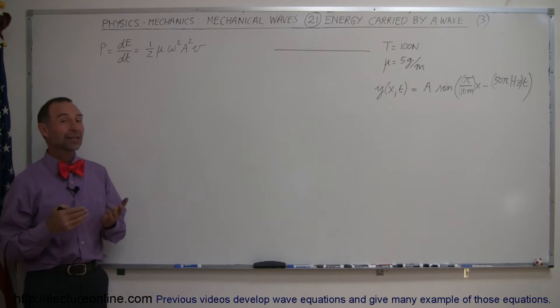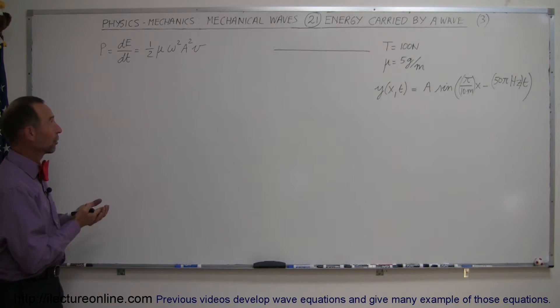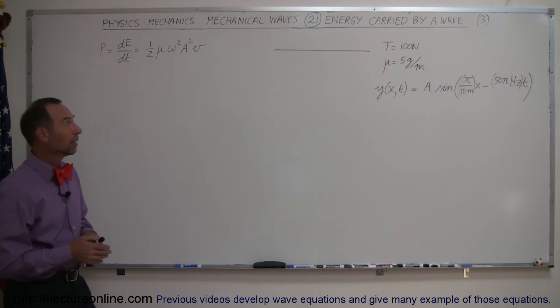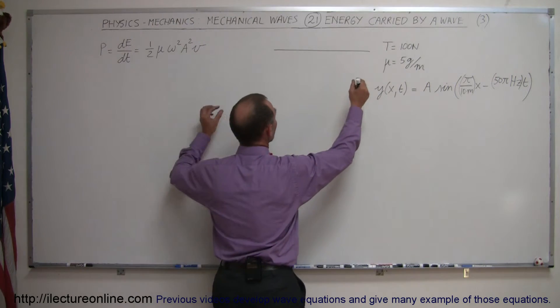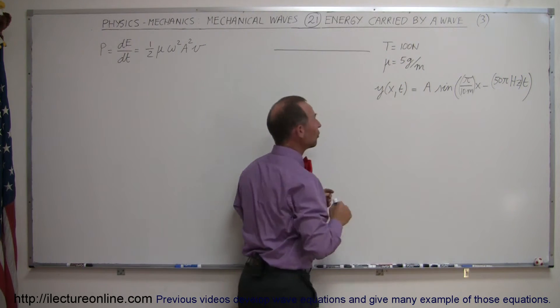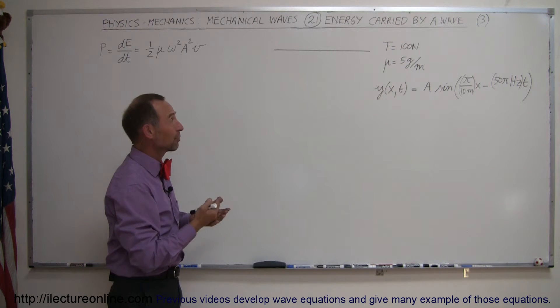And here's a good example of how to calculate the energy transported by a wave. Here's a real example. Let's say we have a string. It's put under a tension of 100 newtons. It has a mass per unit length of 5 grams per meter.